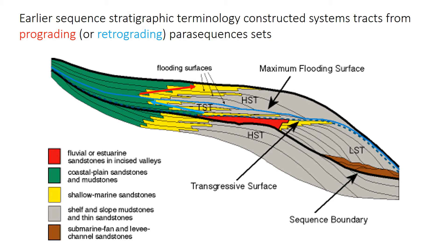You might also notice a few new names of surfaces here. There's the transgressive surface and this thing called the sequence boundary. The transgressive surface marks the change from regression to transgression — in this case, the boundary between the low stand and the transgressive systems tract. The terms we've seen before for this would be the transgressive ravinement surface or the maximum regressive surface. At this scale, the transgressive surface is some combination of those two — probably mostly the maximum regressive surface — but it can be hard to tell if it's erosive like a ravinement surface or conformable. So the term transgressive surface can be a more generic name when you can't really tell which it is.